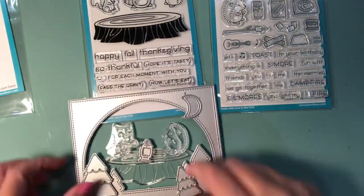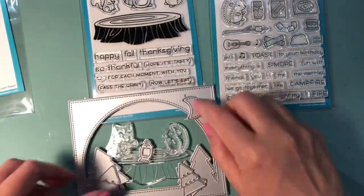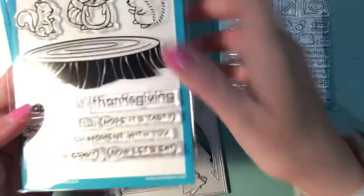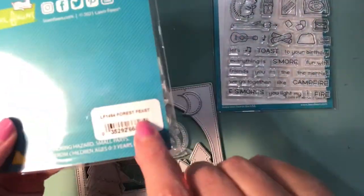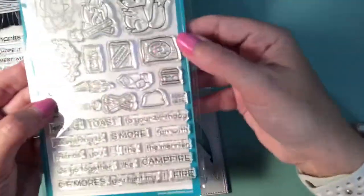We're going to start the card off by using some Lawn Fawn products. The two die sets I'm going to use are Forest Backdrop and Build a Campsite, and the two stamp sets are S'more the Merrier and Forest Friends.